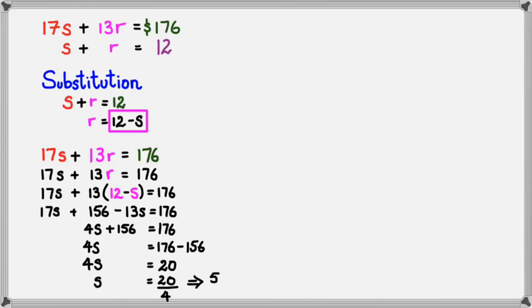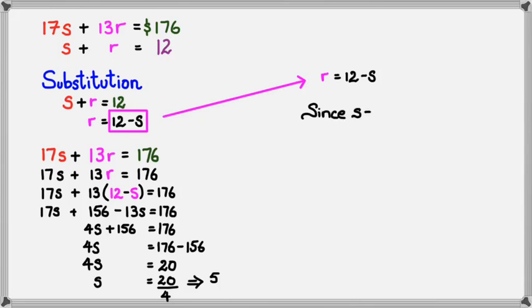What this tells us is S equals 5 — the number of hours Sophia worked is 5. Now we can figure out how many hours Riva worked, because R equals 12 minus S. Since S equals 5, we can say R is equal to 12 minus 5, and that's equal to 7.